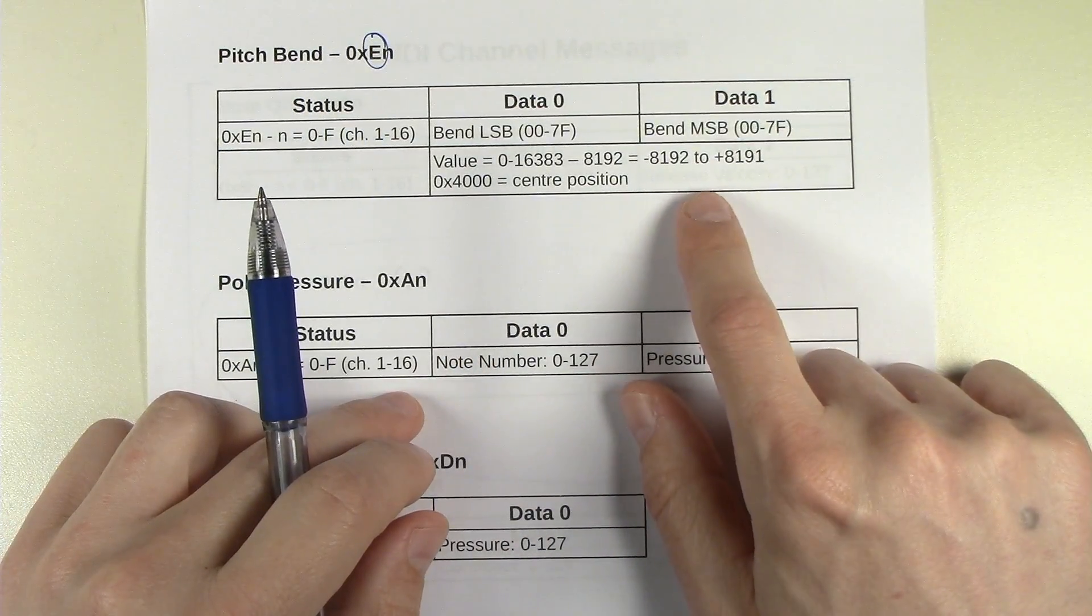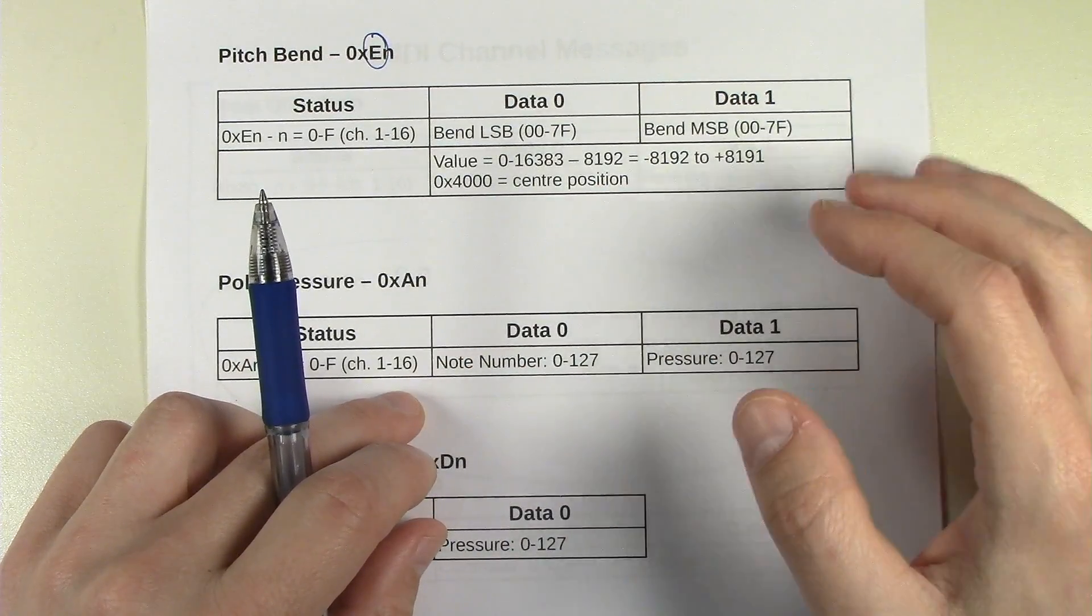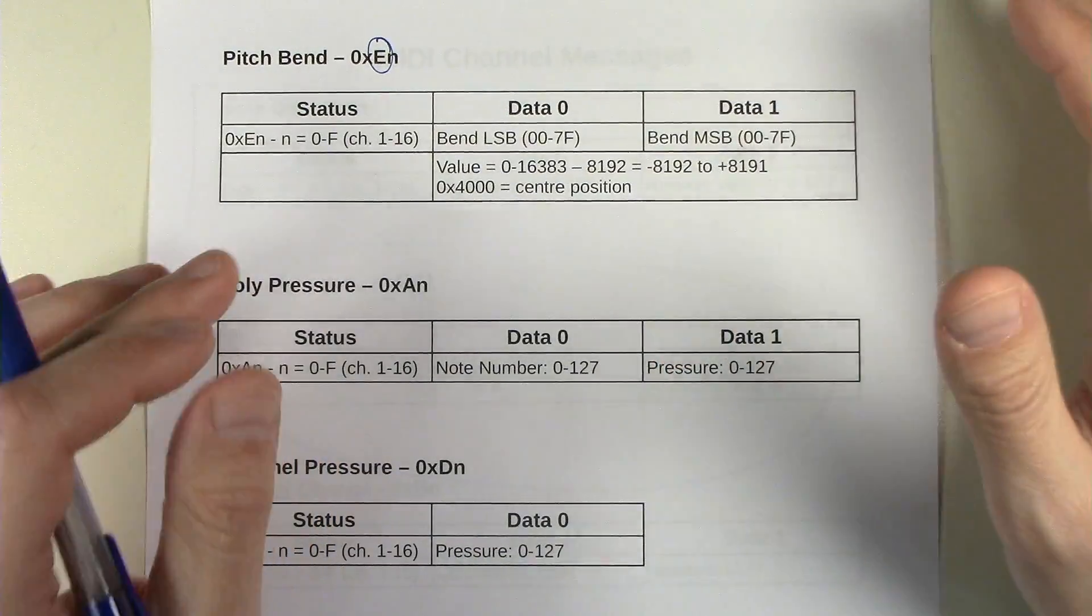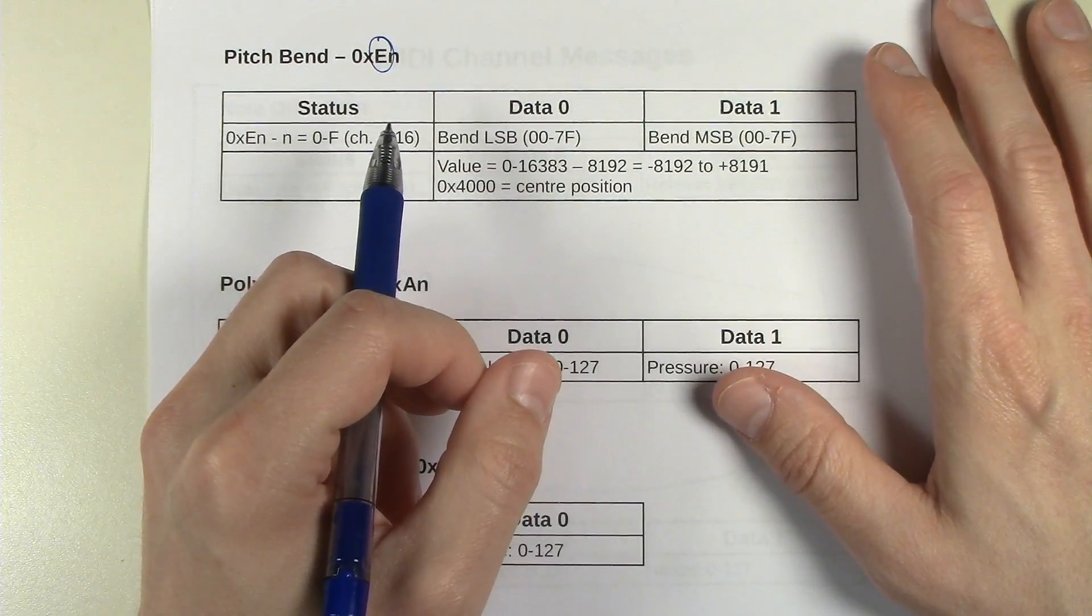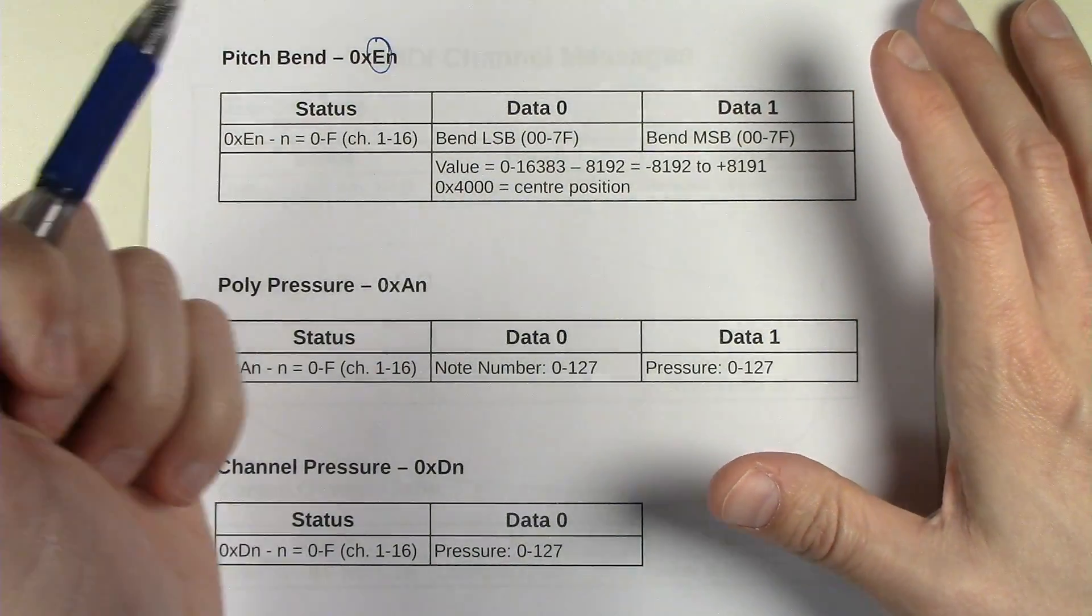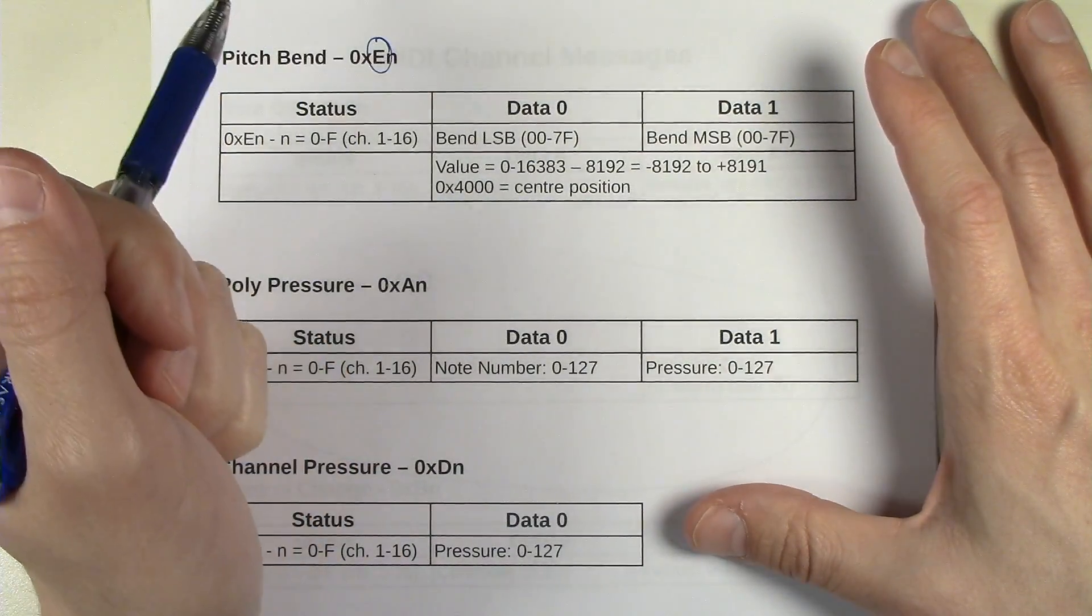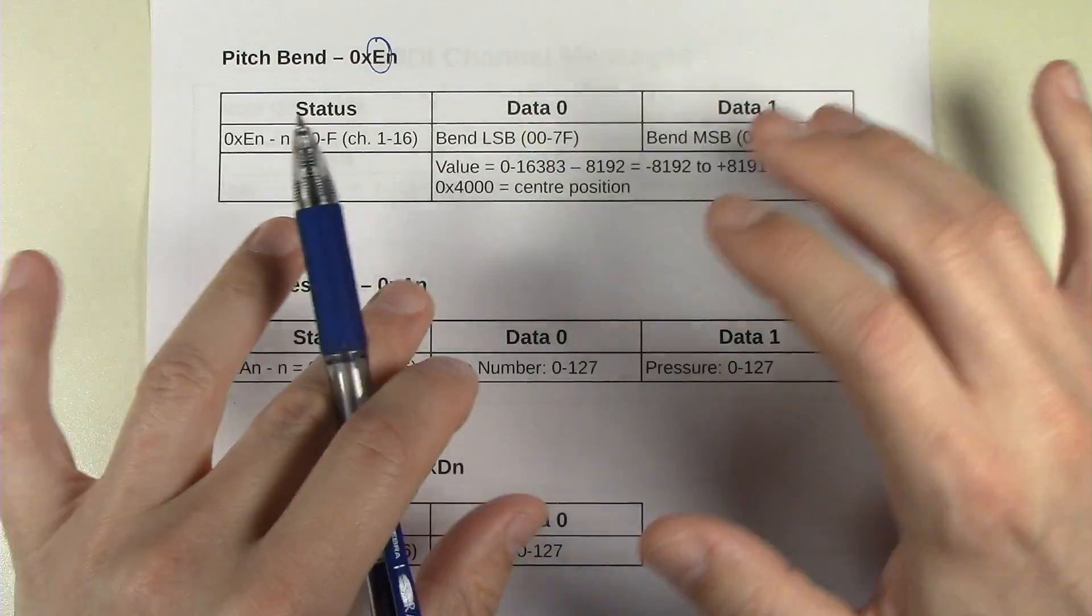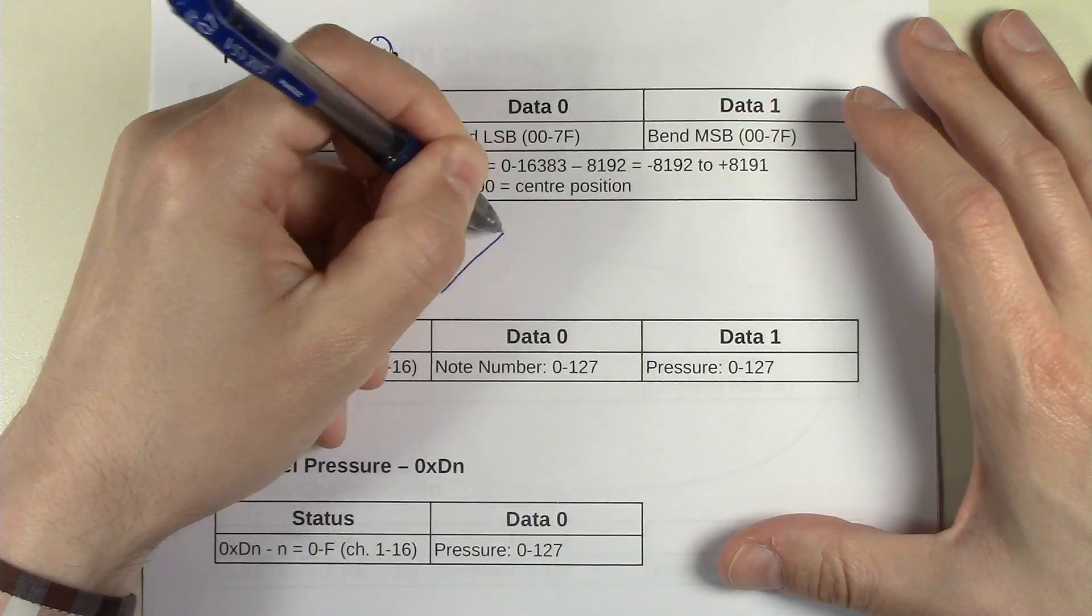So normally these are added together. This is the least significant byte and the most significant byte, and these are basically shifted and oared together. It gives you a range, instead of between 0 and 127, you get a range between 0 and 16383. And that's a positive number only. But then you just have to know that you subtract 8192, and then that gives you a number that ranges above and below 0. And when you leave the bender in the center position, essentially the 0 value, which is encoded this way, that's 4000, means that it's in the center position.